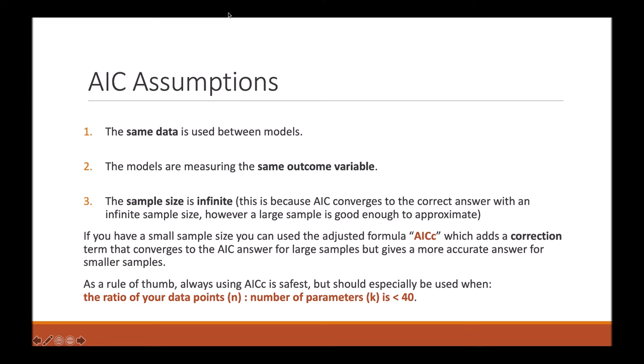However, if you have a small sample size, you can use the adjusted formula AICC, which adds a correction term that converges to the AIC answer for large samples but gives a more accurate answer for smaller samples.